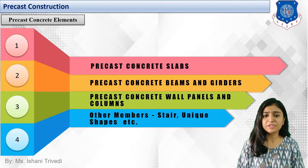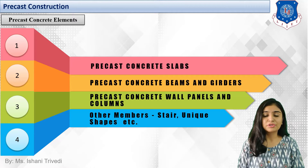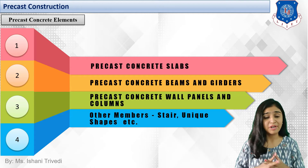The second element is precast concrete beams and girders. A beam is a supporting element, and in the load transfer mechanism: load comes on the slab, from slab it is transferred to the beam, from beam to the column, column to the foundation or footing, and then to the surrounding subsoil. This is the load mechanism followed in framed structures.